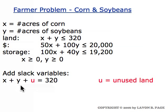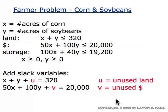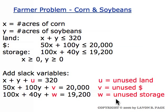Acres of corn plus acres of soybeans plus whatever is not planted in either crop equals all 320 acres in the farm, so we have an equation. In the same way, we add a slack variable in the capital constraint. There are $20,000 — they might not all be spent — but dollars spent on corn plus dollars spent on soybeans plus whatever leftover dollars there are accounts for all $20,000.